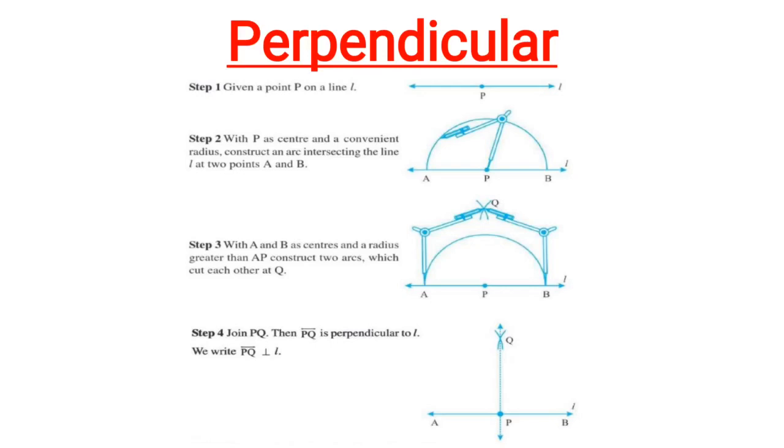Now let us learn how to draw a perpendicular. In order to draw a perpendicular at a point on the line, we must follow the following steps of construction. Step 1 includes given a point P on a line L.